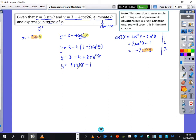Now, if I'm trying to get rid of the sine squared theta, if I know that this is true, then I know that x over 3 is sine theta. So I can substitute that in place of sine theta.